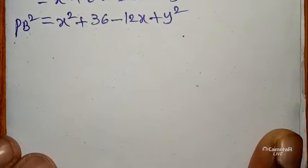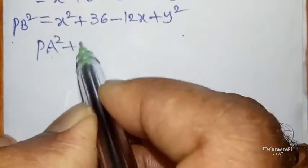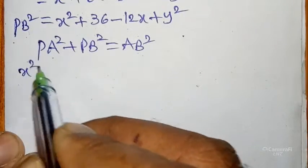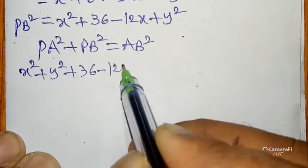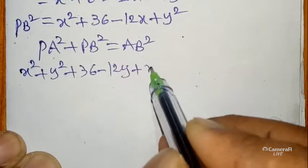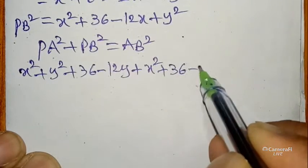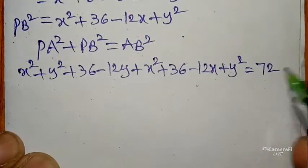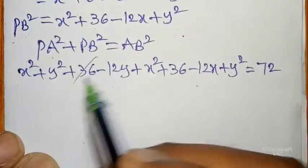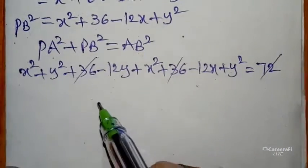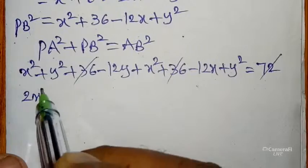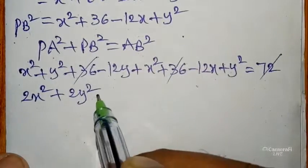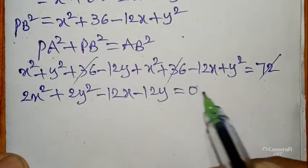According to our right-angled triangle formula, PA² + PB² = AB². Substituting: (x² + y² + 36 − 12y) + (x² + y² + 36 − 12x) = 72. The left side gives 2x² + 2y² + 72 − 12x − 12y = 72. The 72 cancels on both sides, leaving 2x² + 2y² − 12x − 12y = 0.